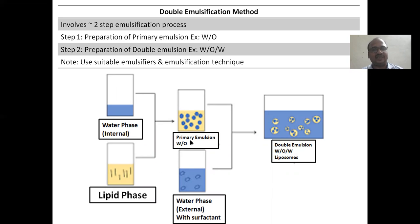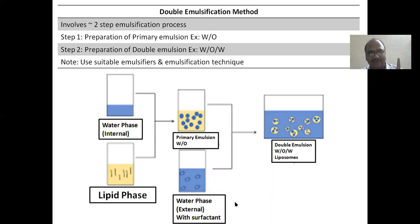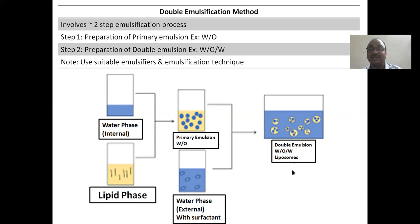Double emulsification technique: in this method, we prepare two emulsions. First, we prepare a primary emulsion — water in oil. Later, we combine this with a water phase again, adding an external surfactant. So you will get a water-in-oil-in-water double emulsification, resulting in water-in-oil-in-water liposomes.